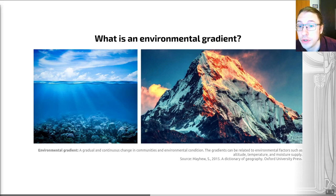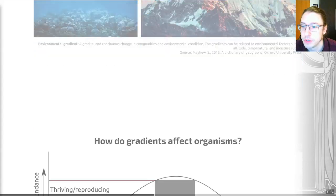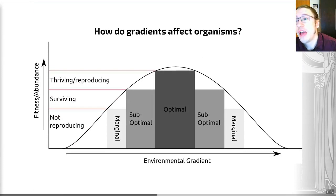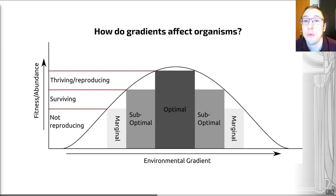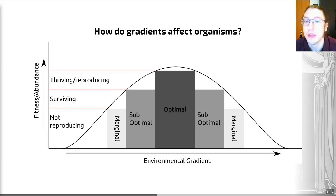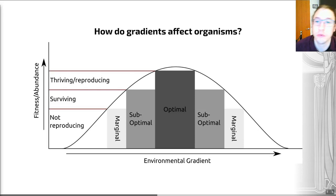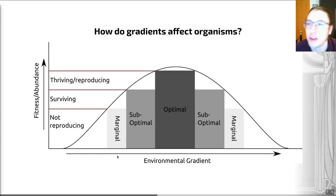Gradients are quite common, although there are numerous environments where you also get abrupt changes in conditions. A key question is how do these gradients affect organisms? As we are aware from our work on evolution, over time populations evolve strategies to maximise their growth and reproduction — namely their fitness — and that occurs within a specific range of environmental factors. Outside an individual's environmental optimum or tolerance range, its physiology and behaviour may be negatively affected, reducing its overall fitness. This graph shows fitness and abundance on the y-axis and any given environmental gradient — be that salinity, oxygen concentration, or temperature — on the x-axis.